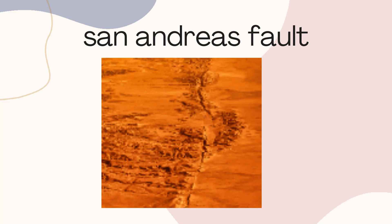The movement along the San Andreas Fault is characterized by strike-slip faulting, where the two plates move past each other in opposite directions.